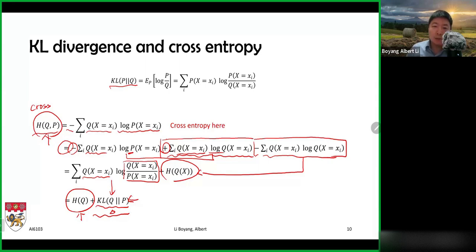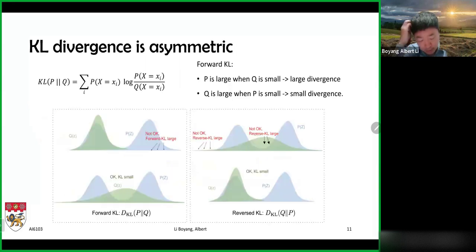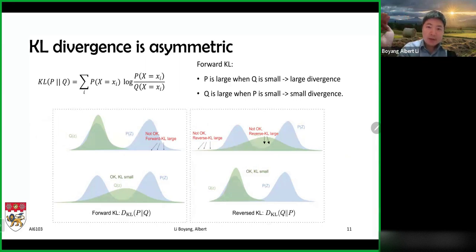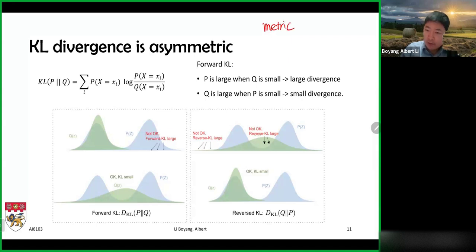Isn't that beautiful? It really makes a lot of sense. Now we want to look at some properties of KL divergence, which is also an extremely commonly used term in modern machine learning. As a distance measure, it is not quite what you may expect.